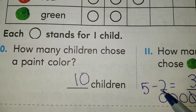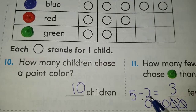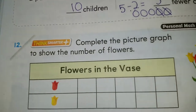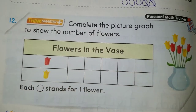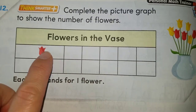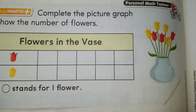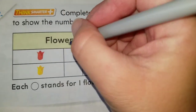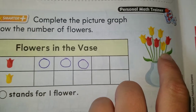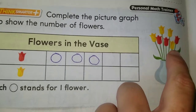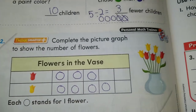Another way to do this subtraction is by counting from two all the way to five — when we subtract, we count from the smallest number to the greater number. Now for number twelve, our last question: complete the picture graph to show the number of flowers. Here we have a vase with flowers. We count red tulips: one, two, and three. So we draw three circles for the red tulips. Now for yellow: one, two, three, and four yellow tulips. We draw four circles. And that was it, boys and girls, for Lesson 10.2.